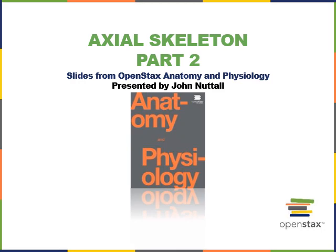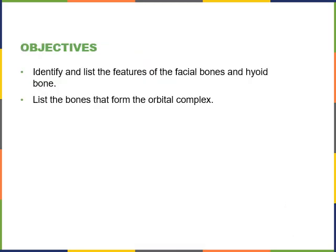This video will cover part two of the axial skeleton. As we go, we'll cover the following study objectives: identify and list the features of the facial bones and hyoid bone, and list the bones that form the orbital complex.